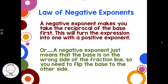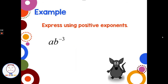A negative exponent means you take the reciprocal of the base first, turning the expression into one with a positive exponent. Or think of it as: the base is on the wrong side of the fraction line, so you flip it to the other side. For example, with ab to the negative three — because it's not in parentheses, the negative three only applies to b. So a stays in place with a positive exponent, and to express b with a positive exponent, we drop it to the denominator: a over b to the third.